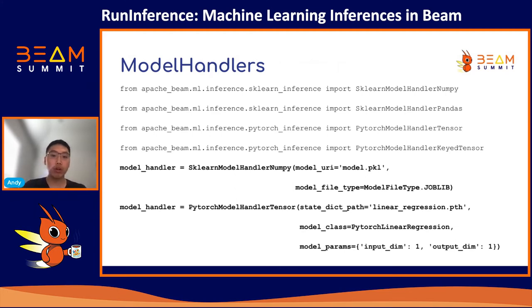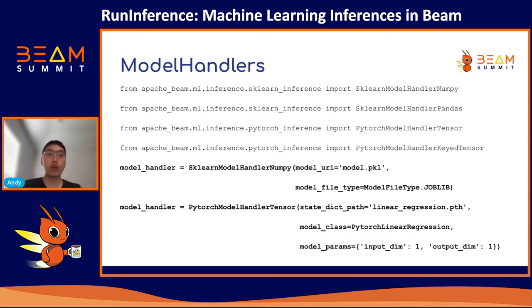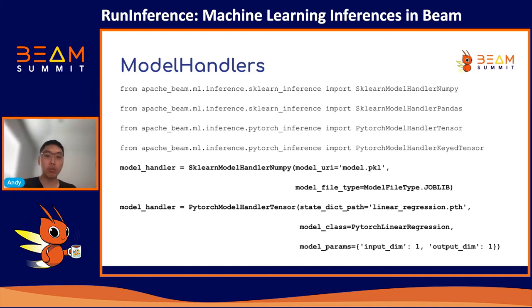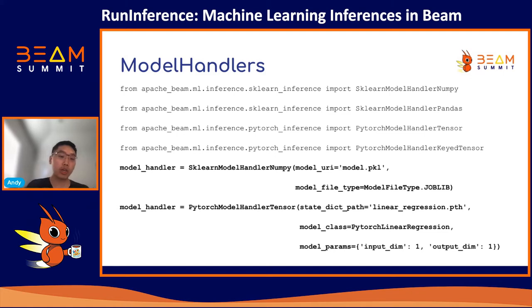To import models, you need to configure a model handler object that will wrap around the underlying model. Which model handler you import depends on the framework and type of data structure that contains the input. For example, if you're using a scikit-learn model and your input data is a NumPy array, use SklearnModelHandlerNumpy. For PyTorch tensors, use PytorchModelHandlerTensor. You will also need to specify a few other parameters such as the path to the pickle model for scikit-learn, or a state dict — otherwise known as model weights — for your PyTorch model.